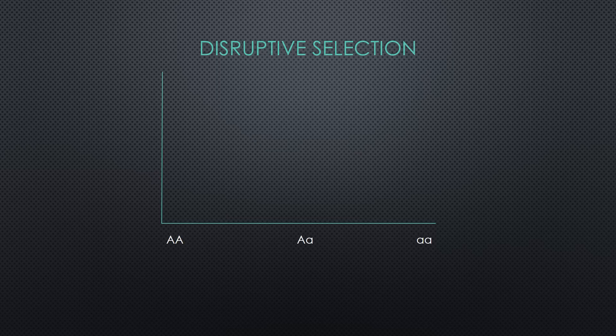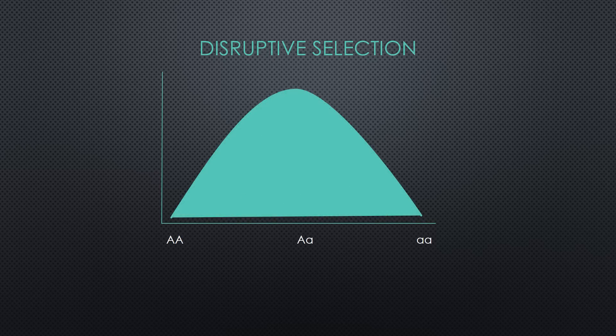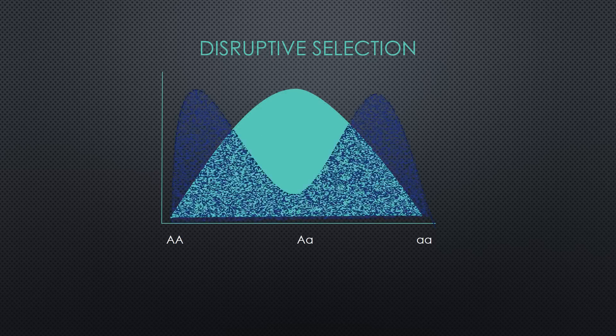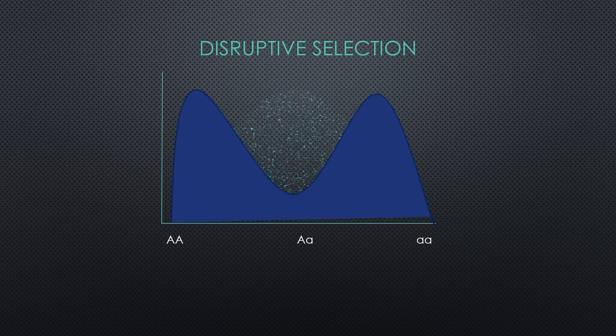The last type of selection is disruptive, which favors both the little a little a and big A big A genotypes. There will be an increase in the big A big A and little a little a genotypes, but the big A and little a alleles will remain equal.